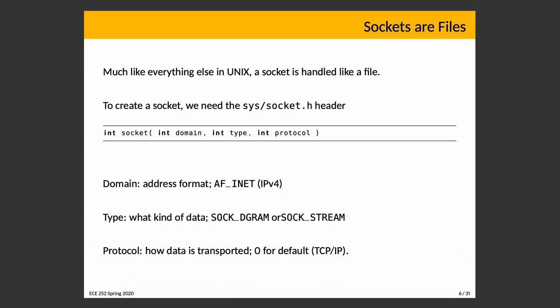Much like everything else in Unix, a socket is a file and it's treated as such. To create a socket, we need the socket.h header, and then we can create a socket with the system call socket(), which takes three parameters — domain, type, and protocol — and it returns an integer. The domain value tells you what kind of address we are interested in.